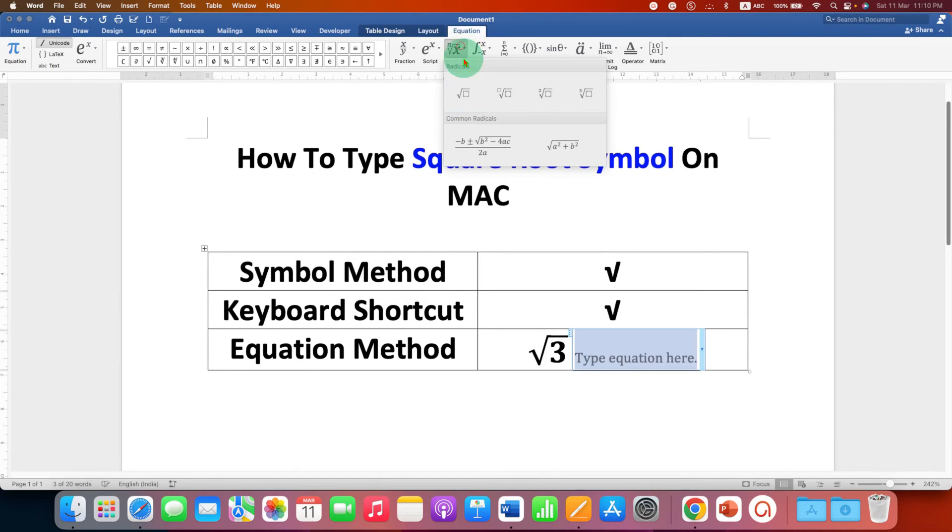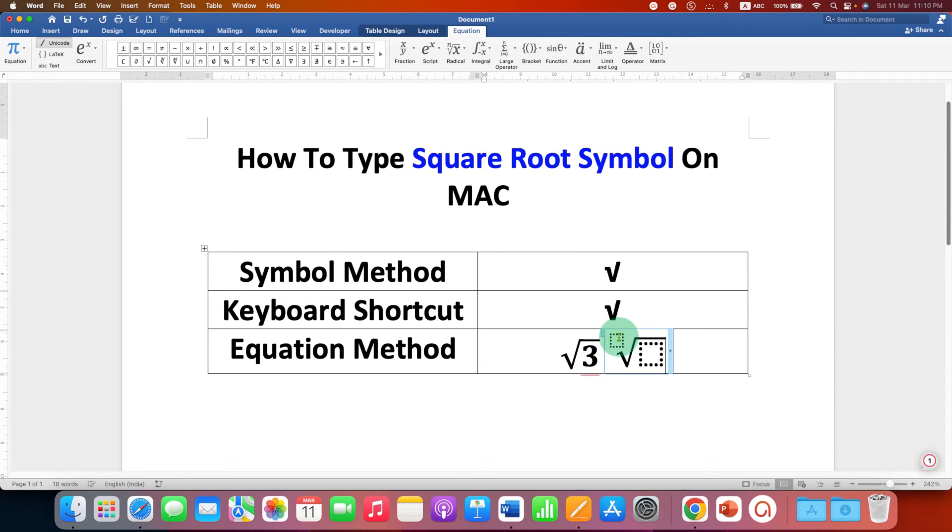You can also type radical with degree. For example, you can select this box and you can type, for example, 3 and 3.